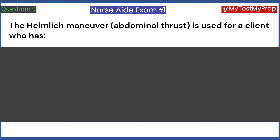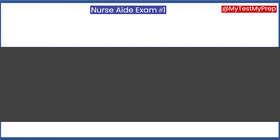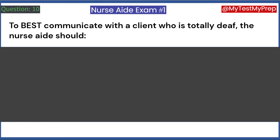The Heimlich maneuver, abdominal thrust, is used for a client who has: A. A bloody nose. B. A blocked airway. C. Fallen out of bed. D. Impaired eyesight. Answer: B. A blocked airway.